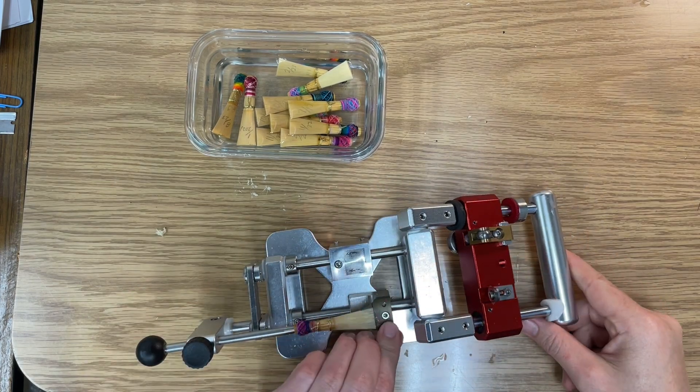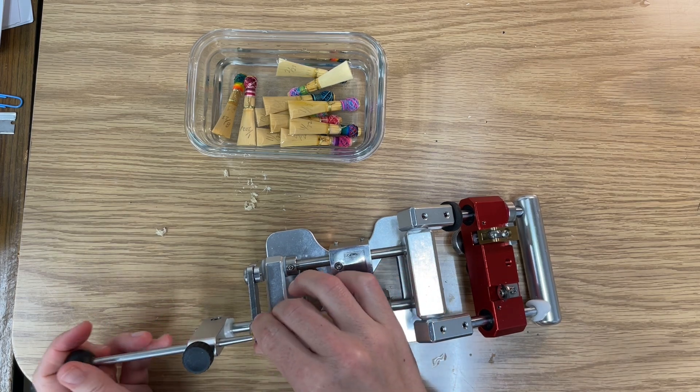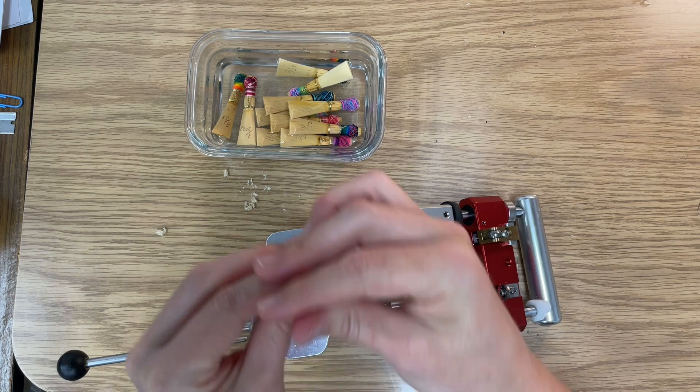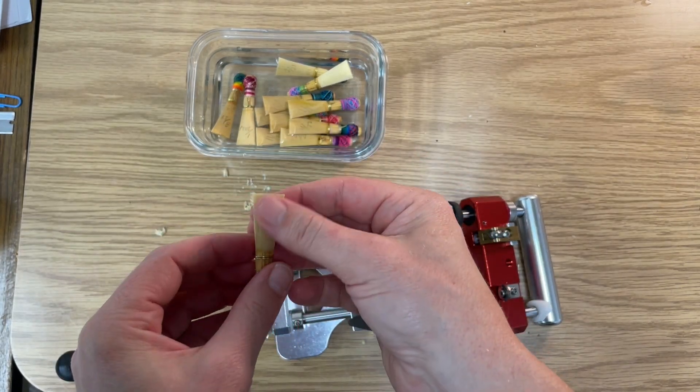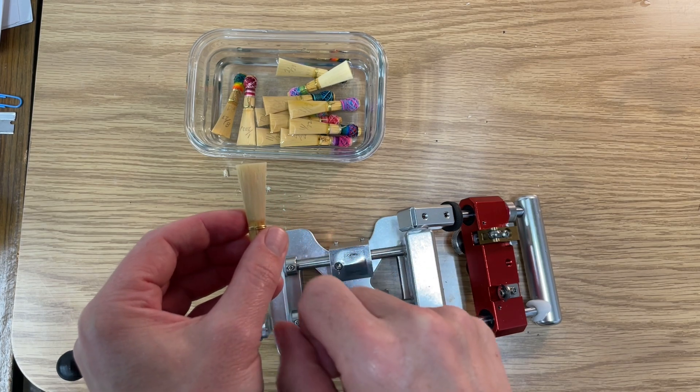Once you've finished, you want to clean up the shavings, take it off, and you'll notice that the reed is a little bit rough in the tip, so you want to sand it a little bit. And then you can go ahead and try it on your bassoon, and you'll want to probably blend from the corners into the channels.